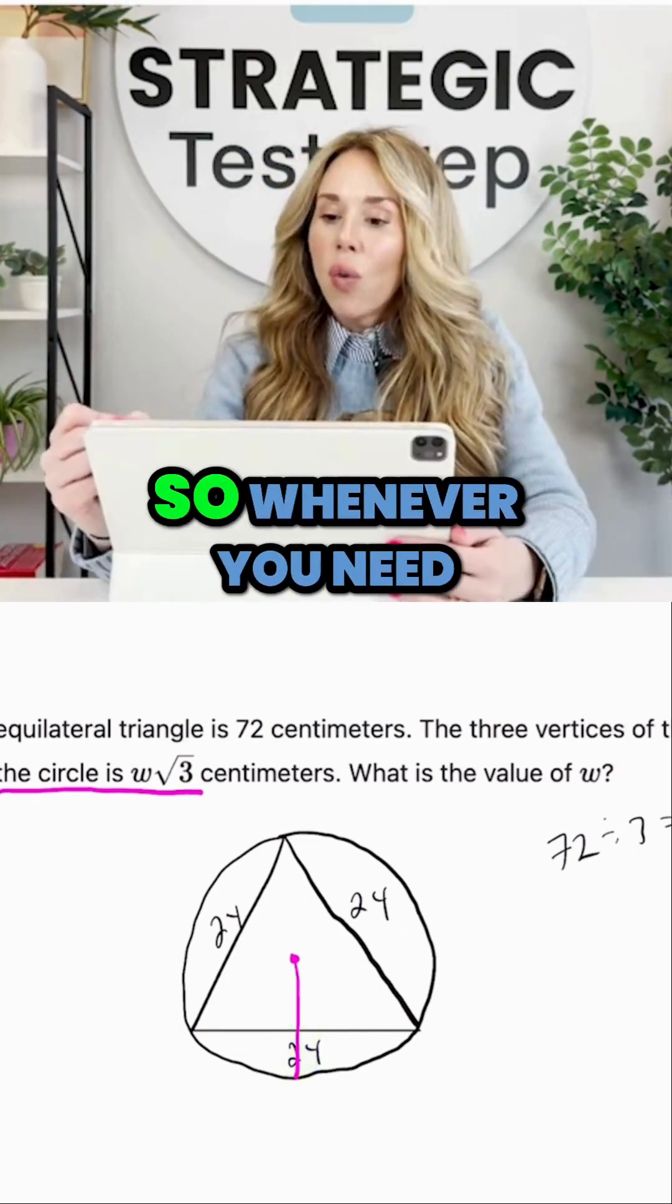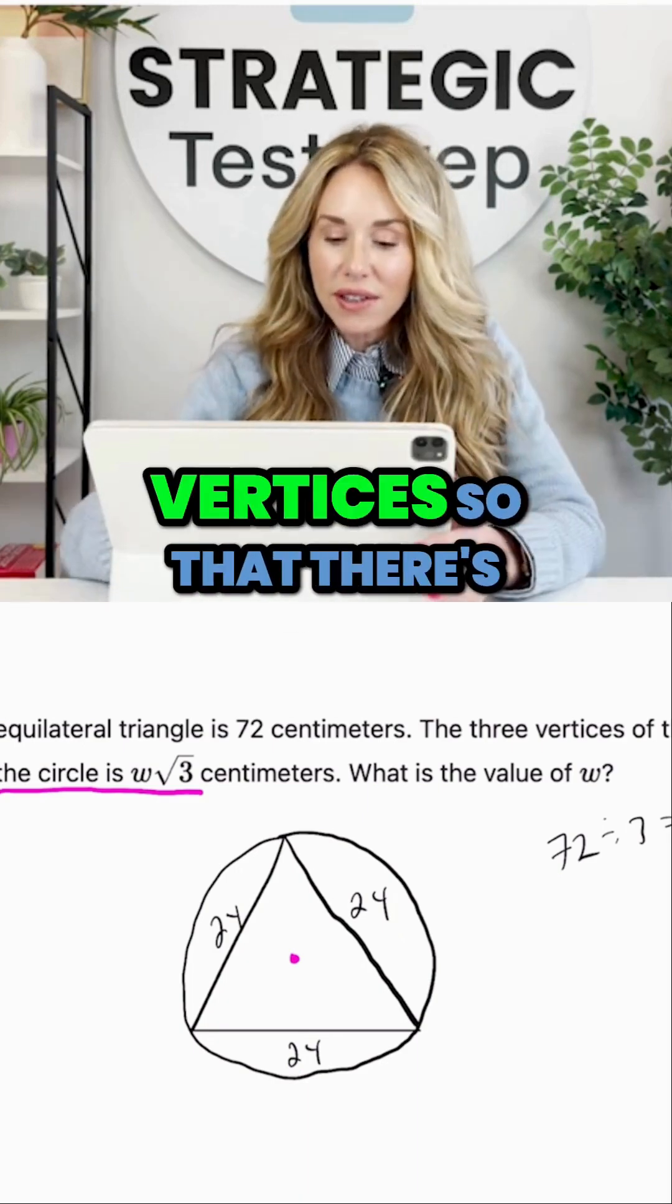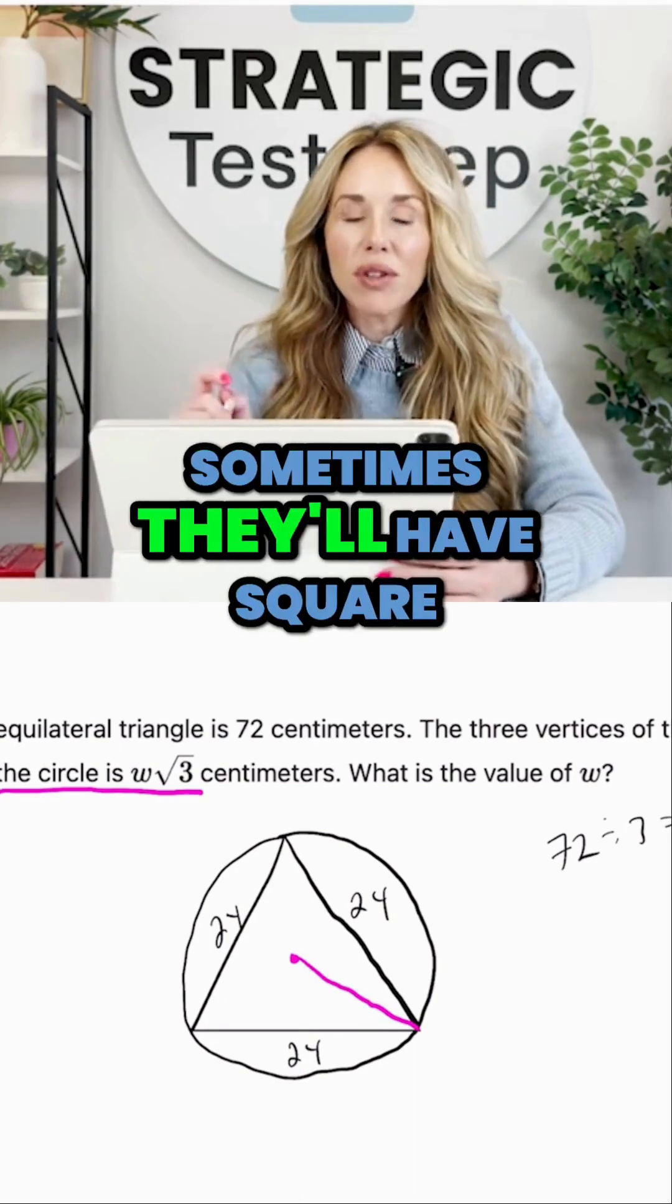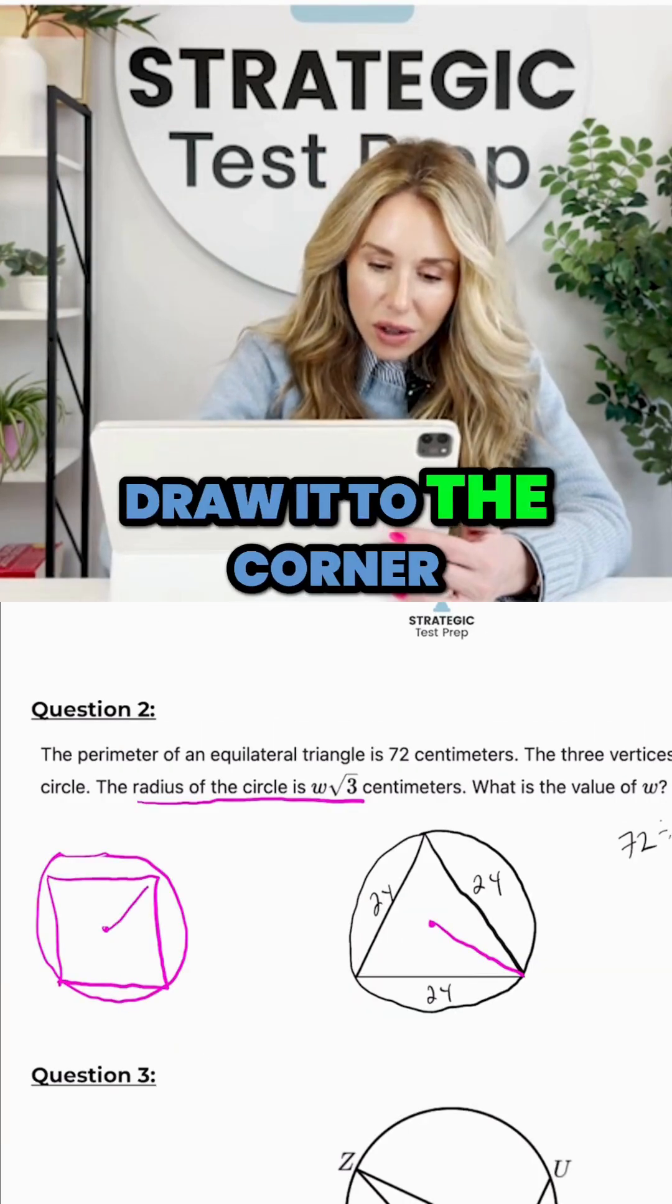Whenever you need to draw in a radius, I really recommend you draw it to a vertices so that there's no gap. You're going to want to draw it in like that. The same goes for when we have a square inscribed in a circle question—you don't want to do that, draw it to the corner.